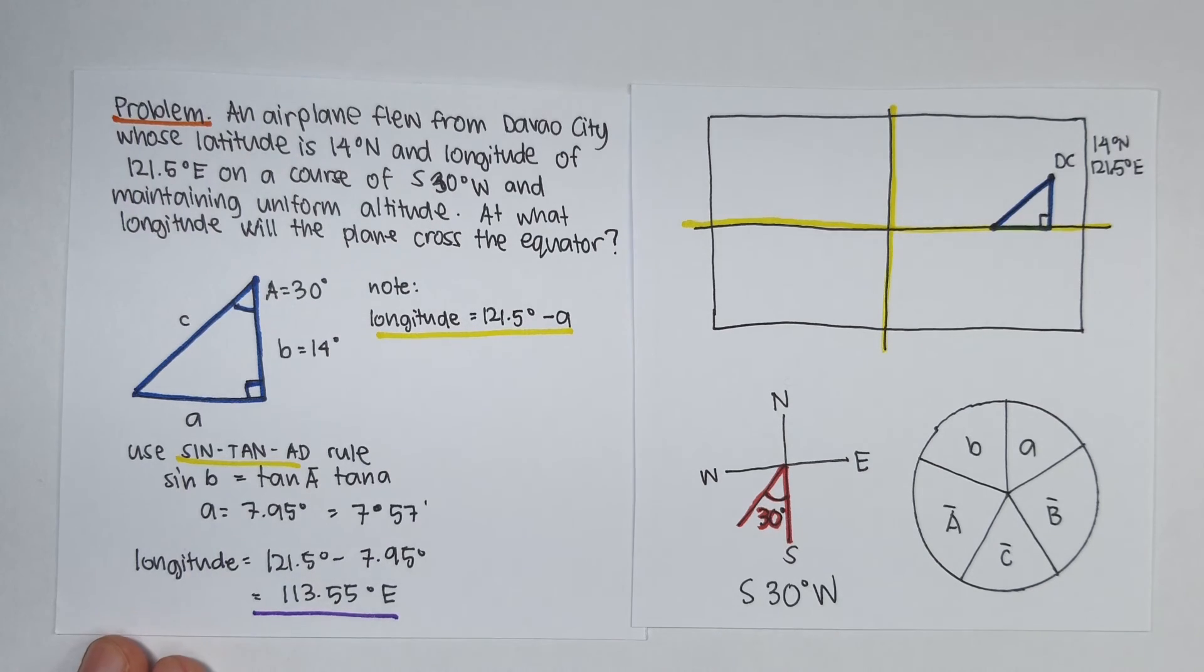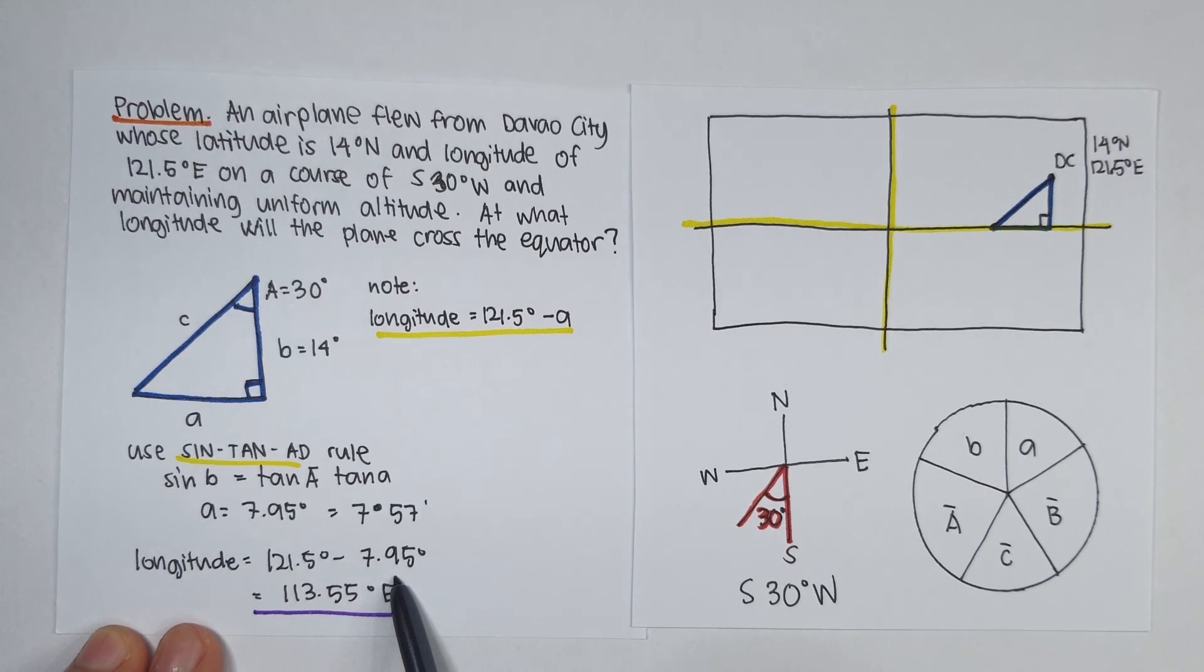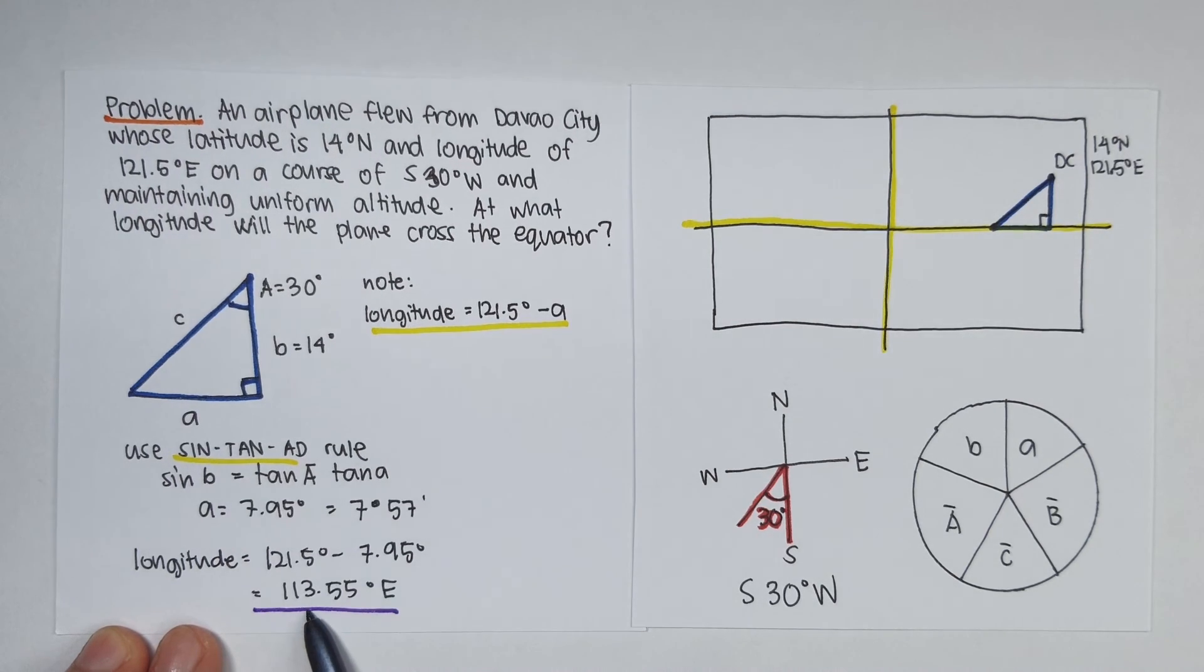Therefore, longitude is equal to 121.5 minus 7.95 degrees. That is equal to 113.55 degrees east.